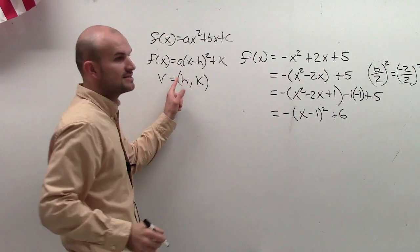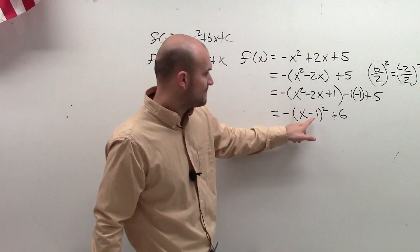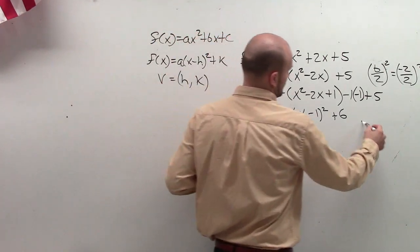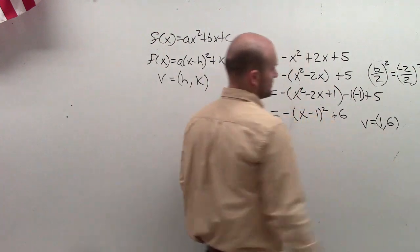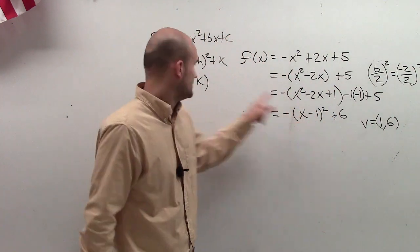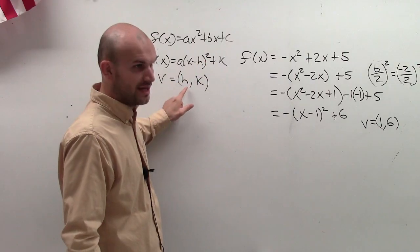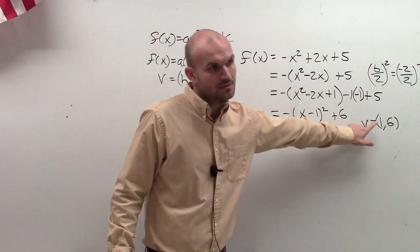Which our vertex form is f(x) = a(x - h)² + k, where your vertex is equal to (h, k). Notice that the vertex is the opposite sign here. So my vertex, which you should have got, is going to equal (1, 6). It's the opposite sign of what's in your standard form. If it's x - h, it's going to be h.